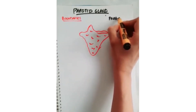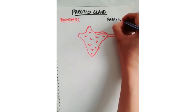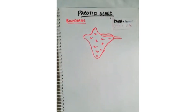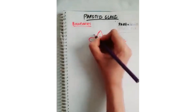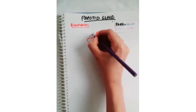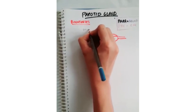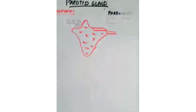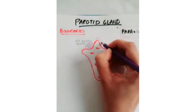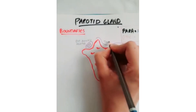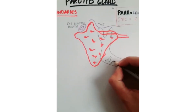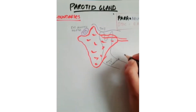Para means around and otic means ear, so this gland is situated somewhat around the ear. From this we get the first boundary: superiorly you have your external acoustic meatus and also your temporomandibular joint. Anteriorly you have your ramus of mandible, and posteriorly you have your mastoid process.